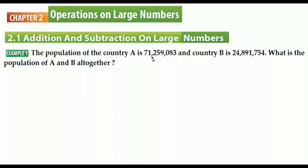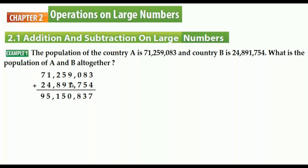We have to add 71 million 259 thousand 83 and 24 million 891 thousand 754. We start from the ones digit, then tens, then hundreds. The answer we get is 95 million 150 thousand 837.